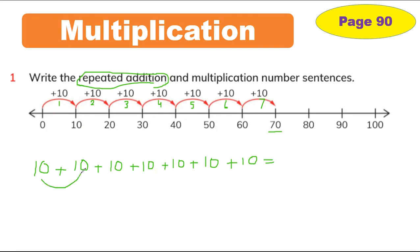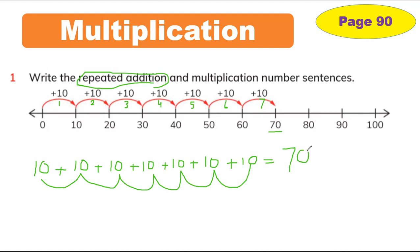Repeated addition means you have to add all the tens together. 10 plus 10 is 20, plus 10 is 30, plus 10 is 40, plus 10 is 50, plus 10 is 60, plus 10 is 70. So this is the repeated addition — repeating means we use the same number again. When we add them all together we get 70.